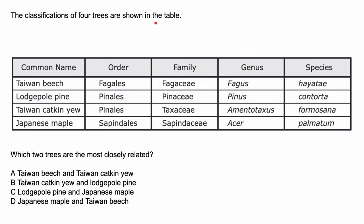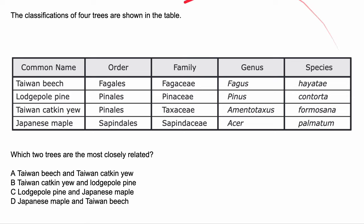The classification of four trees is shown on the table. Remember, we have our common names down here — sometimes they switch it up, so just pay attention to that. We have the different common names and trees, then order, family, genus, species. Order is more broad and you get more specific until you reach species. Looking at this chart, which two are the most closely related?